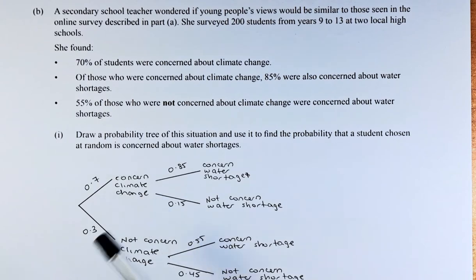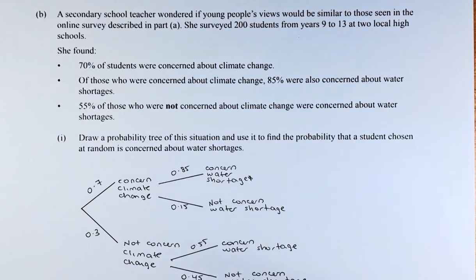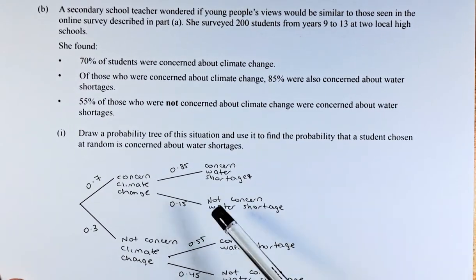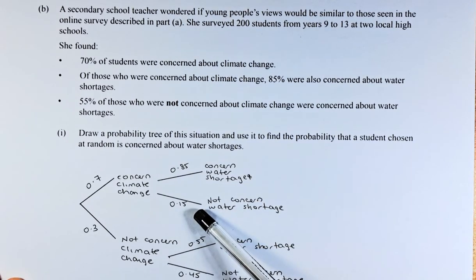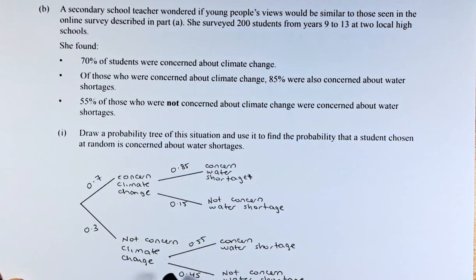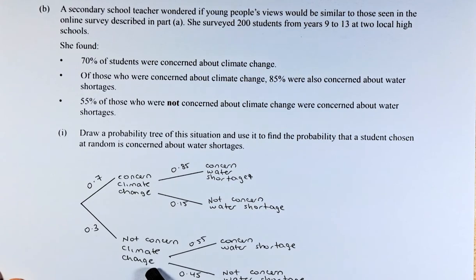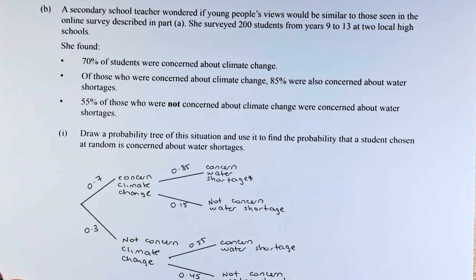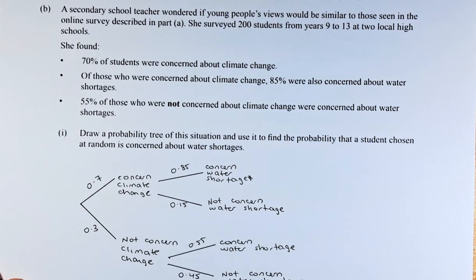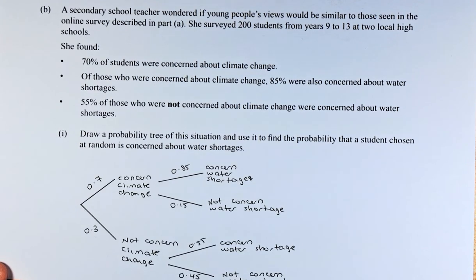Of those who were concerned about climate change, 85% were concerned about water shortage — so 0.85 were concerned about water shortage and 0.15 or 15% were not concerned. Of those who were not concerned about climate change, 55% were also concerned about water shortage — so 0.55 concerned about water shortage and 0.45 not concerned about water shortage.